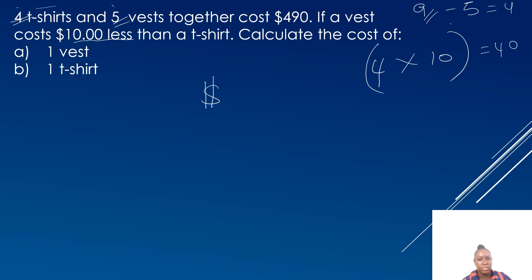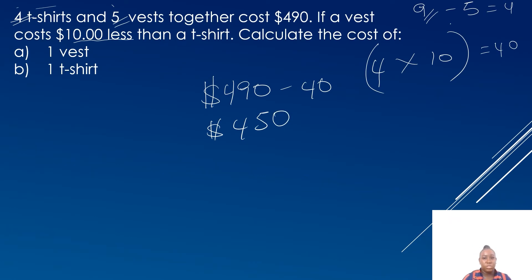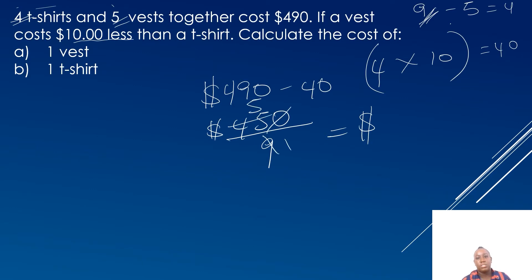Now I am going to subtract the $40 from $490. When I subtract $40 from $490, I get $450. Now that I have the cost of nine vests, which is $450, the next thing I need to do is divide by my total parts, which is nine. This gives me the cost of one vest. Nine into nine is one, nine into 45 is five, nine into zero is zero. So the cost of one vest is $50.